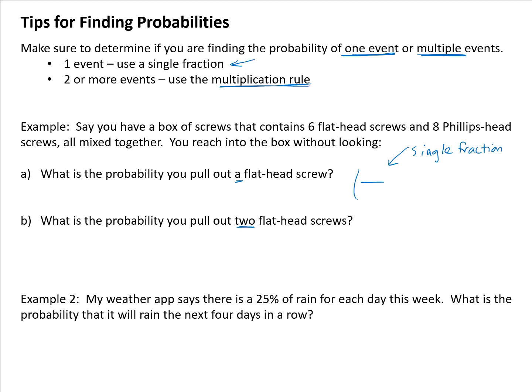A single fraction, whereas when you have two events, picking out two flathead screws, you are talking about two probabilities that get multiplied together. So that's important to recognize how many things are happening that you're trying to find the probability of. In this first situation, the probability you pull out a flathead screw, there are six flathead screws out of a total of 14. We simply calculate 6 divided by 14 is approximately 42.9%.